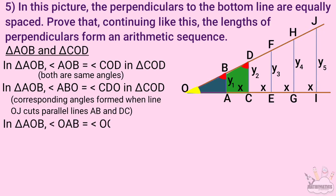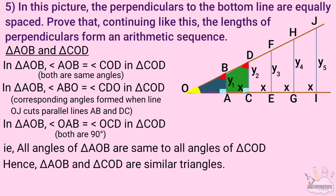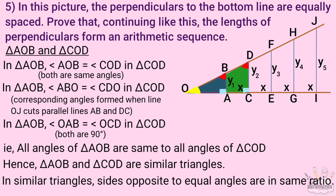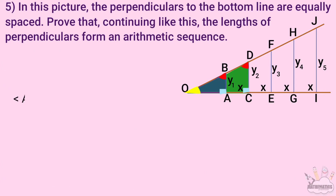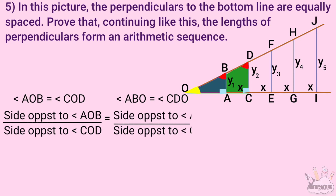Therefore triangle ABM and triangle CDM have corresponding equal angles, so they are similar triangles. In similar triangles, sides opposite equal angles are in the same ratio. So, side opposite angle ABM by side opposite angle CDM equals side opposite angle ABM-O divided by side opposite angle CDM.